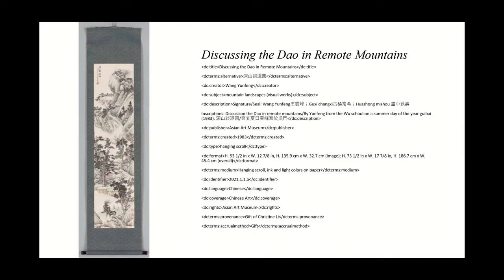Things of note about this one — for anything in a foreign language, you can include the alternative title. So if you see under DC terms, 'alternative,' I have the title in Chinese with the same meaning. Then the creator, the subject — mountain landscapes — and the description.